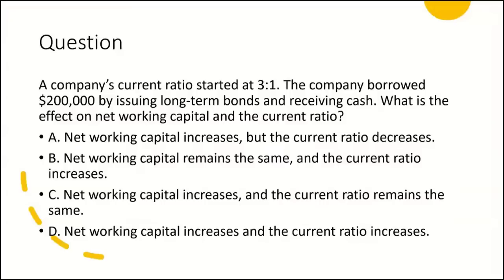Consider this question: a company's current ratio started at three to one. The company borrowed $200,000 by issuing long-term bonds and receiving cash. What is the effect on net working capital and the current ratio? Choice A says net working capital increases but the current ratio decreases. Net working capital is current assets minus current liabilities. Cash of $200,000 increases current assets, and since we're borrowing long-term there's no impact on current liabilities — so net working capital does increase. But the current ratio would also increase, not decrease, making A half wrong. Choice B says net working capital remains the same — that's incorrect.